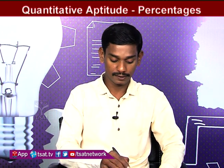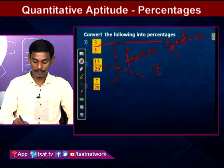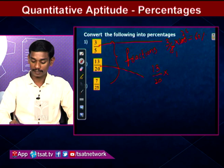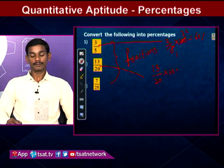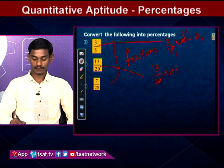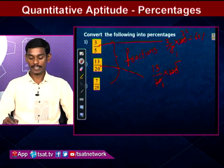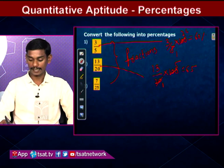Second: 13/20 as a percentage. Multiply by 100: 13/20 × 100 = 13 × 5 = 65%. So the fraction 13/20 equals 65 percent.